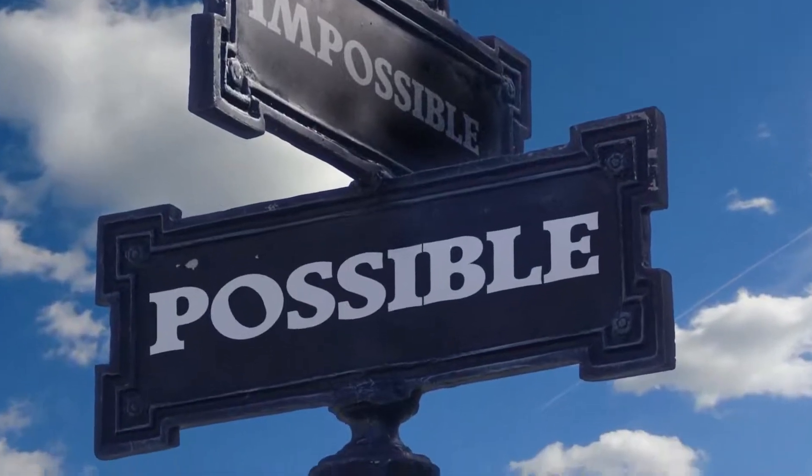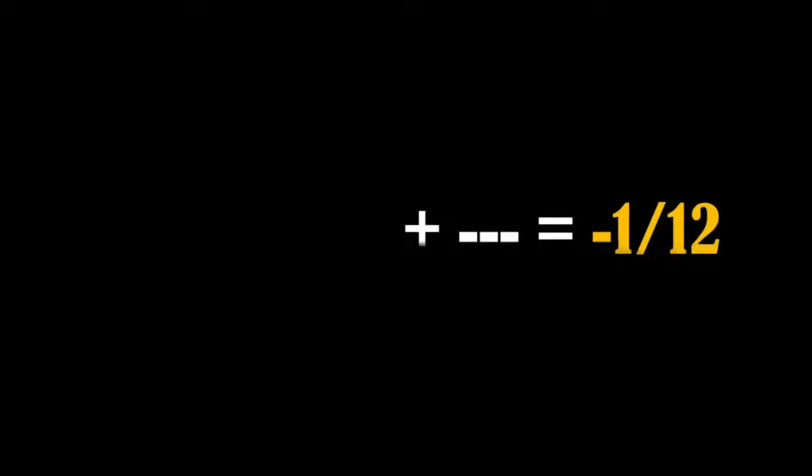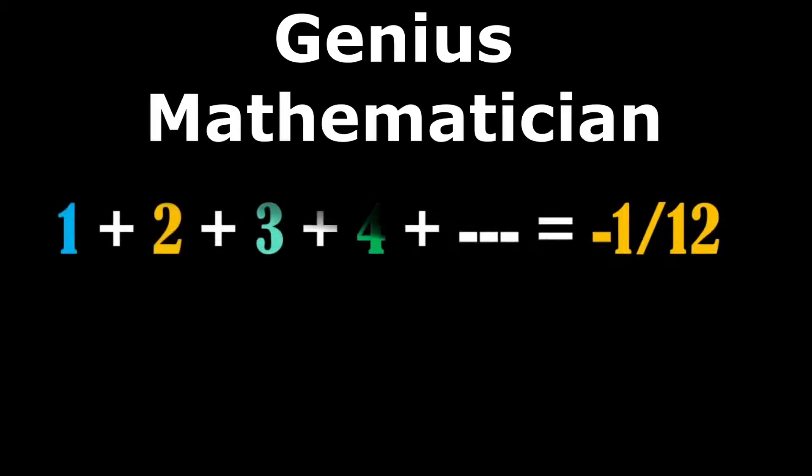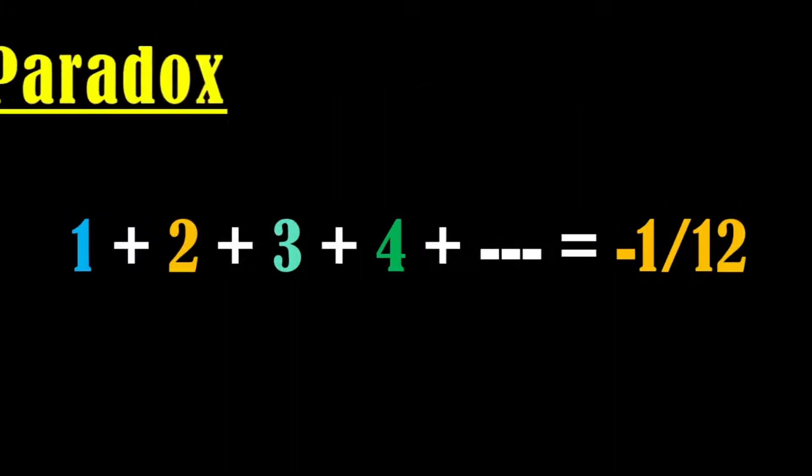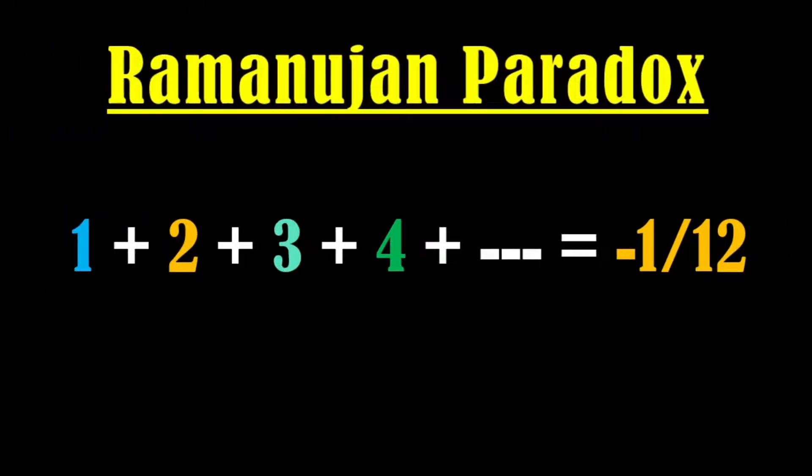At first, it looks impossible. But this is actually correct. The sum of this series was found by a genius mathematician named Ramanujan. So this is also called as the Ramanujan paradox.